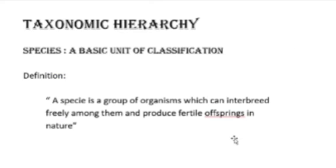Now, what is species? Species is actually the basic unit of classification — it is the basic unit of taxonomic hierarchy. Species is a group of organisms which can interbreed freely among themselves, and the offspring they produce are fertile, and this interbreeding takes place naturally.